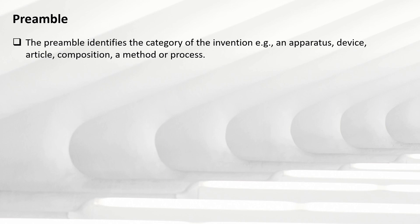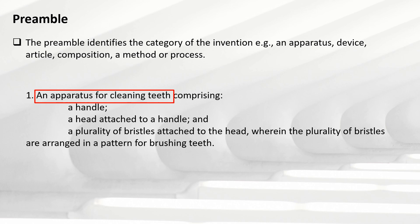The preamble identifies the category of the invention — for example: apparatus, device, article, composition, a method, or process. Whatever your invention is, whether an apparatus, a device, or a composition, that can be identified from the preamble. In the toothbrush example, 'an apparatus for cleaning teeth' is the preamble, shown in the red box. This makes clear what the invention is and what the object of the invention is. It can also be a method or process, in which case the preamble is written accordingly.